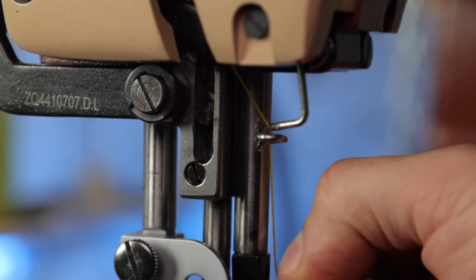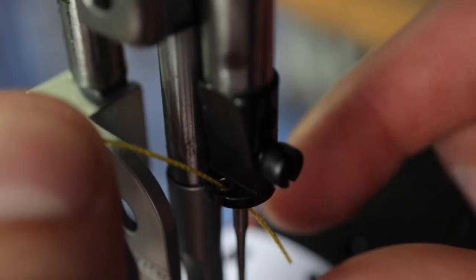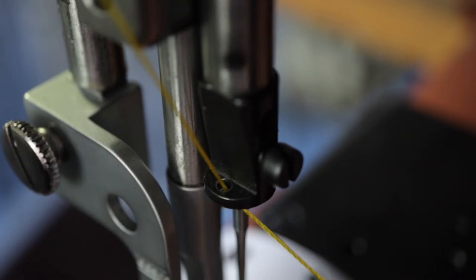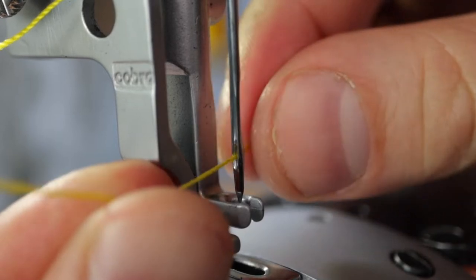After that, there is a curly thread guide to pass through. On the needle bar there is a hole—thread the hole and go down towards the needle. Thread the needle from left to right and put the thread through the center foot.